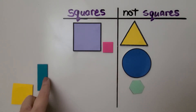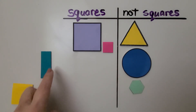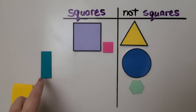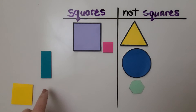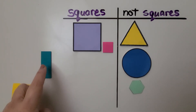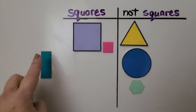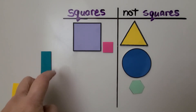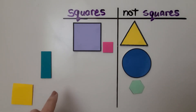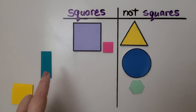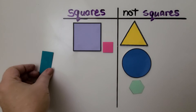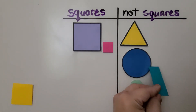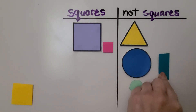What about this one? It has one, two, three, four corners. Is it a square? Well, if you look, the sides don't match. Here's a short side, and here's a short side, and here's a long side, and here's a long side. Squares are supposed to have sides that are the same and match each other. That's not a square — that's a rectangle. Let's put it over here with not squares.